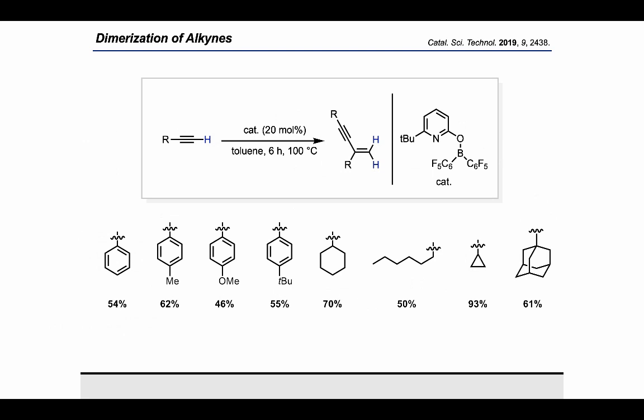Indeed, with catalytic amounts of the pyridonate borane, we were able to dimerize eight different aromatic and aliphatic alkynes with moderate to very good yields. This is to the best of our knowledge the first example of a transition metal-free dimerization of terminal alkynes.